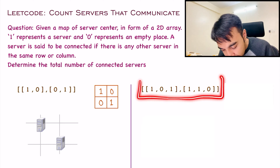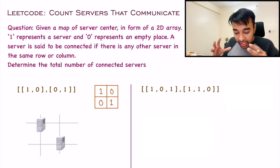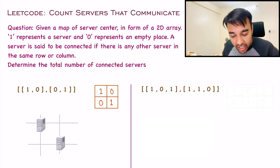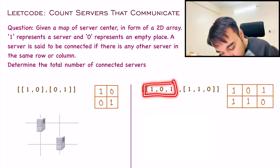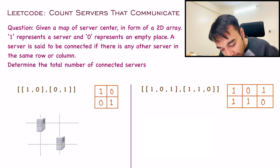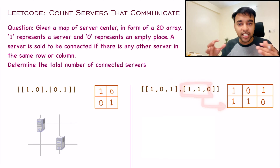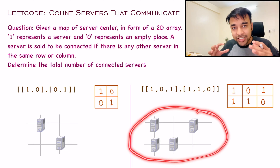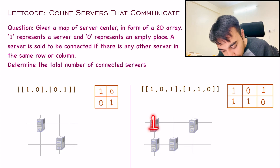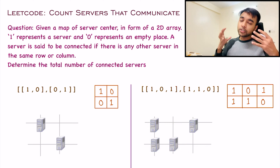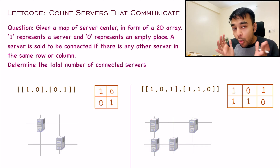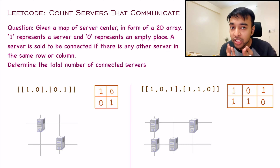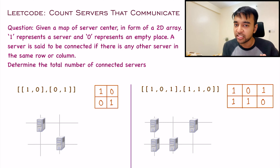Similarly, let us look at test case number 2. We again have a grid formed of a 2D array. This first array will become your first row and this second array will become your second row. Once you map it out, you will get this kind of a server center. You can see these values: 1, 0, 1 and then 1, 1, and 0. This actually defines what is meant by this problem statement and how this server center is actually formed.